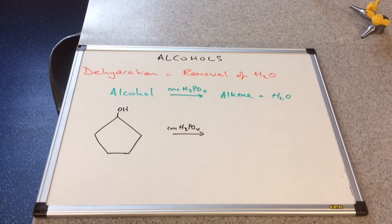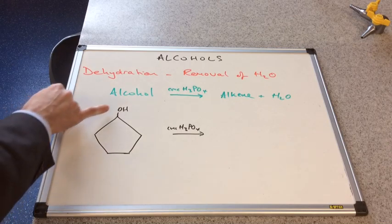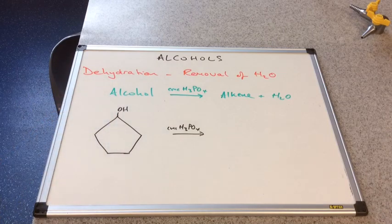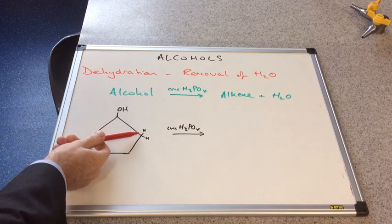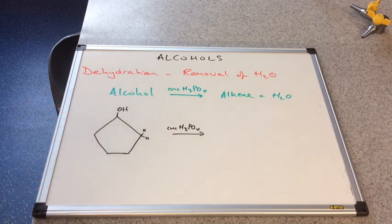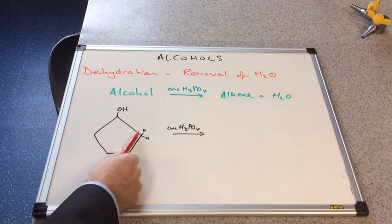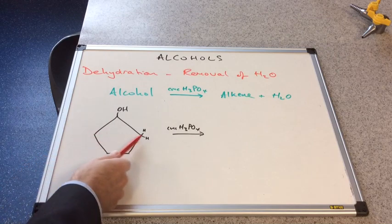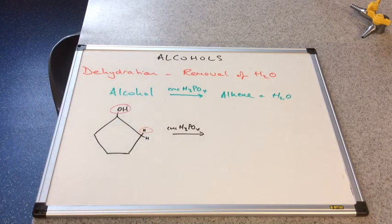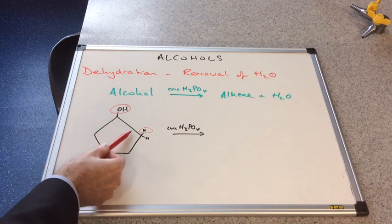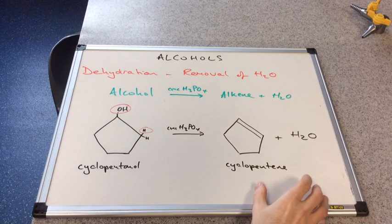Straight away you should be thinking: concentrated phosphoric acid is going to dehydrate the alcohol — remove water — taking the OH off and another H from an adjacent carbon. Remember the rule: the hydrogen that combines with the OH group has to come from an adjacent carbon. I've drawn both adjacent carbons; it doesn't matter which one we take it from, so we'll take that OH group and that hydrogen, and the double bond will form here.